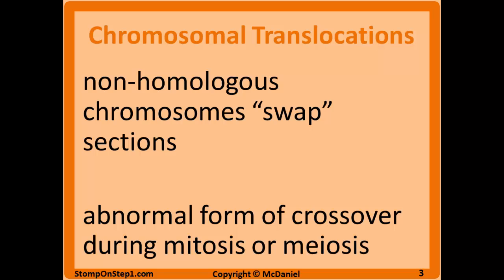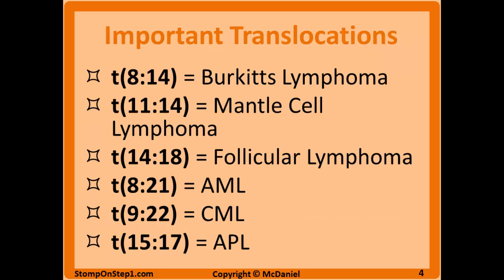Chromosomal translocations involve non-homologous chromosomes swapping sections — essentially an abnormal form of crossover during mitosis or meiosis. During this process, genetic material can be lost or added, and when genes move to new chromosomes they come under the regulatory control of new promoters, leading to much more or much less of certain gene products than normal, which can cause serious problems. Translocations are often associated with infertility or certain cancers. The highest yield translocations for Step 1 will be covered in more detail in the appropriate organ system sections.